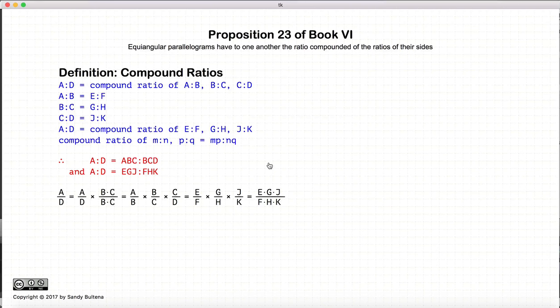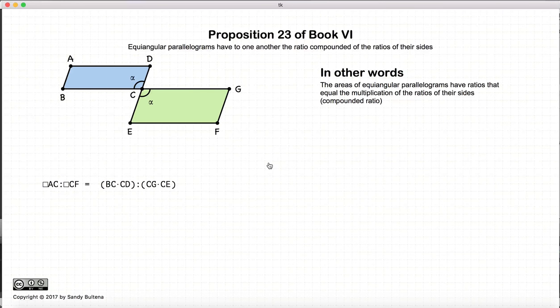So this proposition, what is it stating? It's stating that if I have two parallelograms, that the ratio of the areas of the parallelograms will be the compounded ratio of their sides. Or in other words, the A times B times C, so this side by this side multiplied together, and then C times E and E times F, again, these two sides multiplied together, that the ratio of the areas of these two parallelograms will be equal to the ratio of the two sides multiplied together.